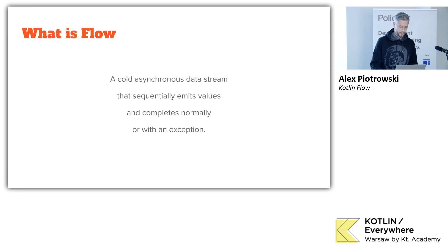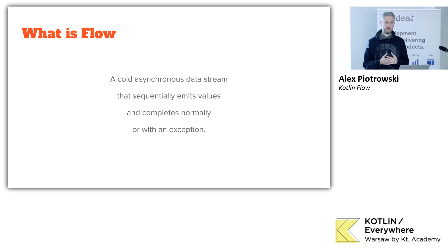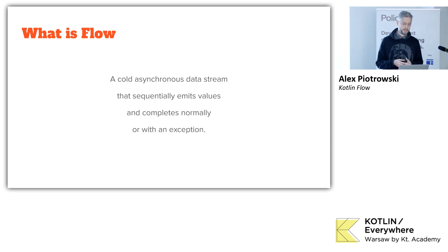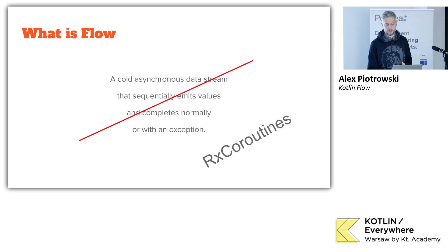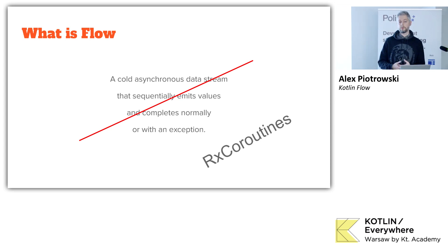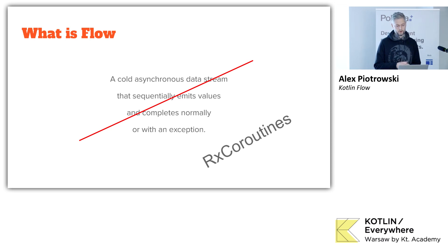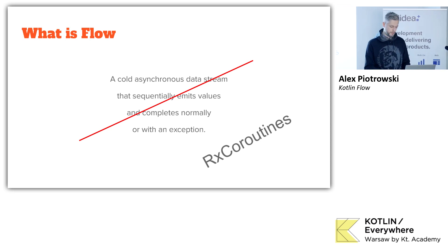So what is flow? And again, it's from documentation. Flow is a cold asynchronous data stream that you can emit values for. What's interesting in this definition is that flow basically sounds very much like RxJava. So a flow should be called RxCoroutines, in my opinion — then everything would be explained, no presentation would be needed. But they decided to call it flow. Long story short, it's just RxCoroutines — RxJava for coroutines.